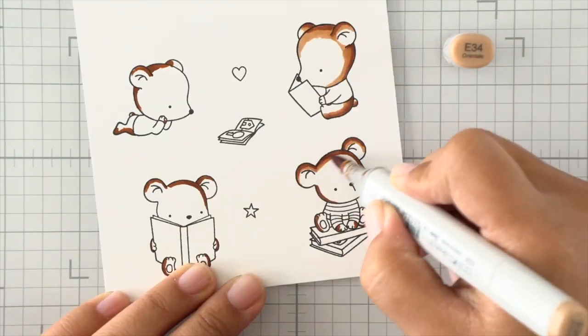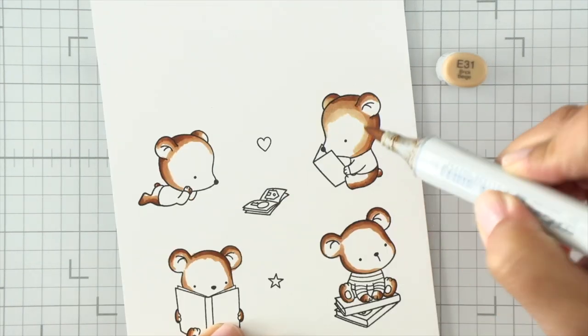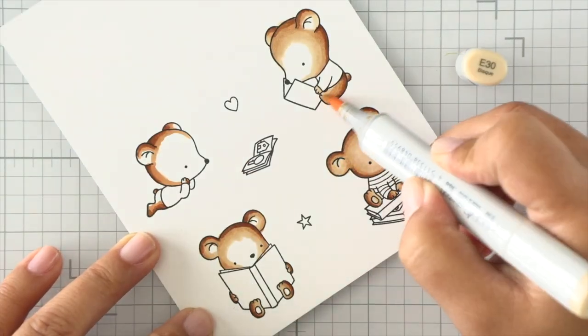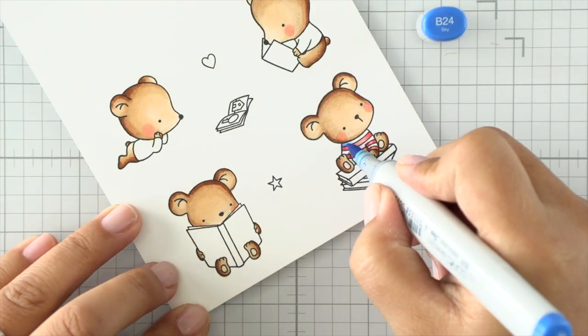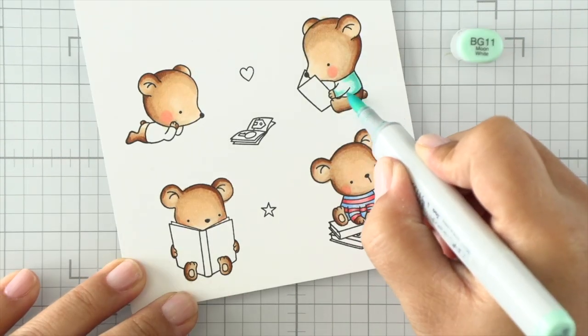We're going to be coloring first with some Copic markers. I'm going to speed through a lot of this, so it's going to go fairly quickly. If you're interested in the color combinations that I use, be sure to check out the blog where it will all be listed for you, and check out the links below for the supplies and tools.